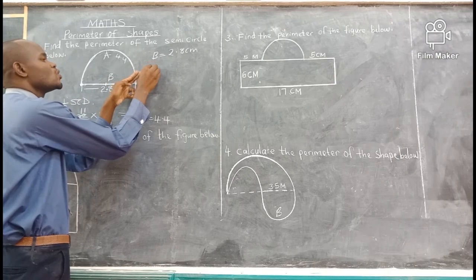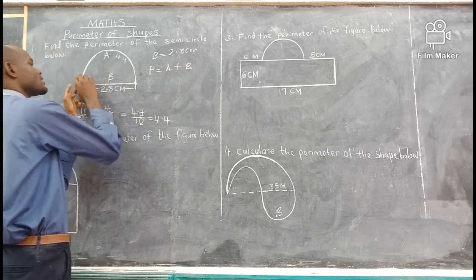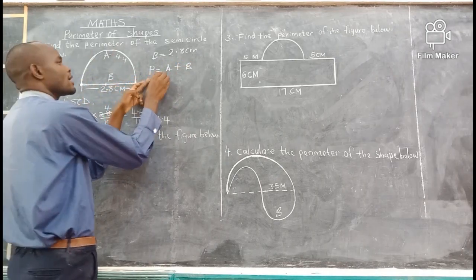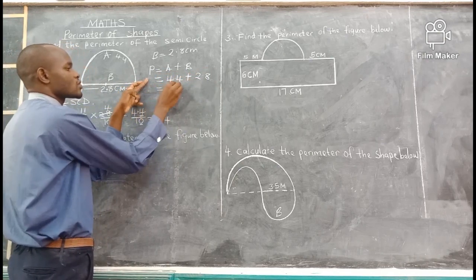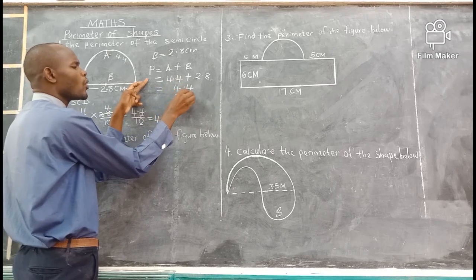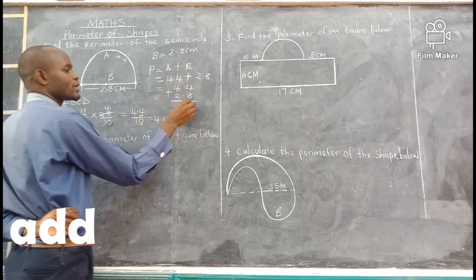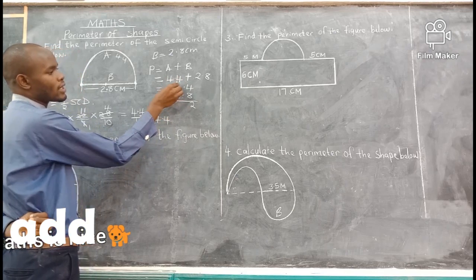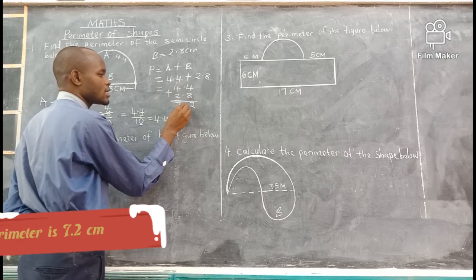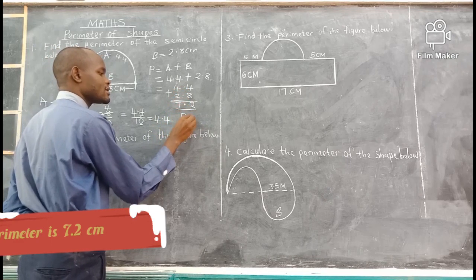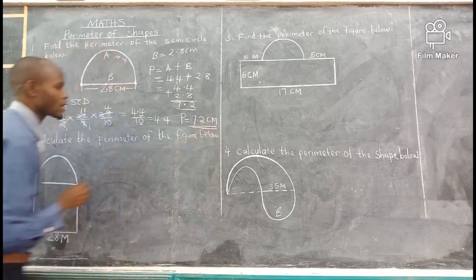To get the perimeter, you add A plus B. A is 4.4 plus B is 2.8. So 4.4 plus 2.8: 4 plus 8 gives 12, write 2 carry 1; then 4 plus 2 plus 1 gives 7. Remember the decimal point. So our perimeter is 7.2 centimeters. That becomes our correct answer.